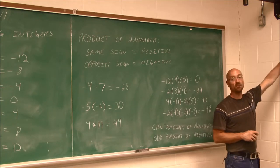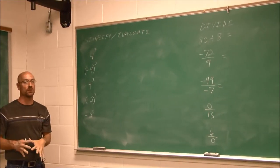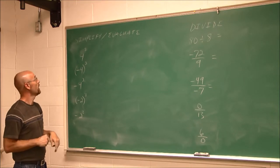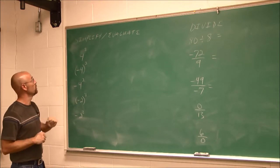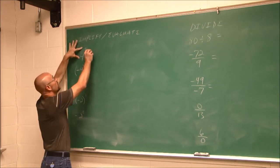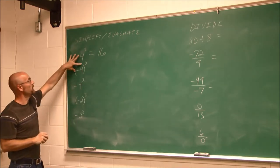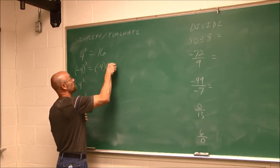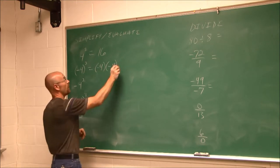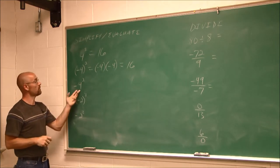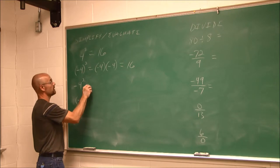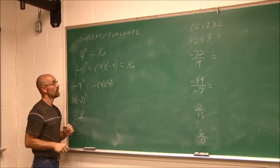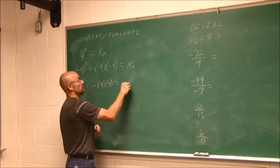Now let's simplify and evaluate — we're going to apply exponents to integers. We've introduced exponents before, and we talked about the exponent only applying to what it's adjacent to, so we have to watch grouping symbols. 4 squared: we know this just says 4 times itself — 4 times 4 is 16. Negative 4 squared in parentheses means negative 4 times negative 4 — two negatives gives a positive — it also gives 16.